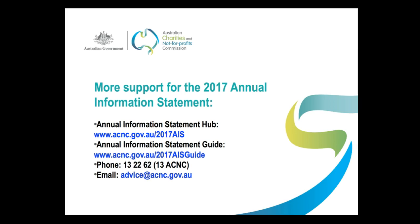As always, if you have any questions or need any specific assistance with the Annual Information Statement, you can call us on 13 2262 or get in touch via email at advice@acnc.gov.au. Thank you.